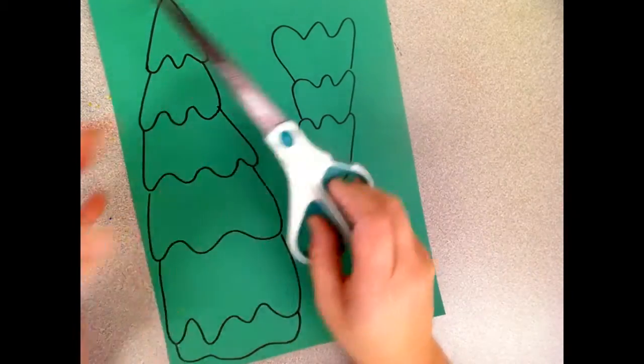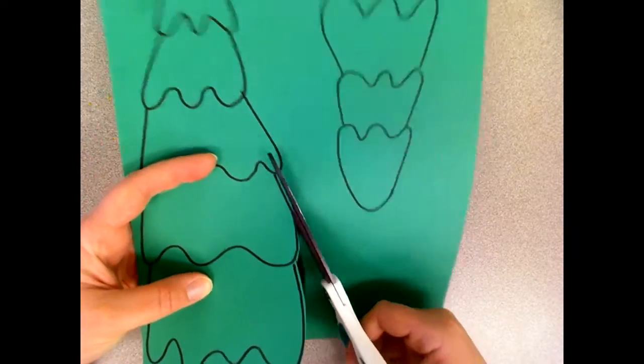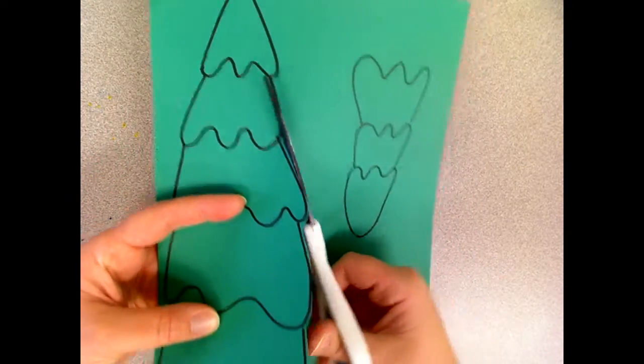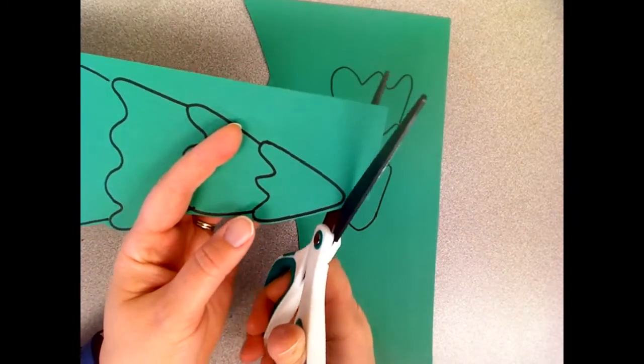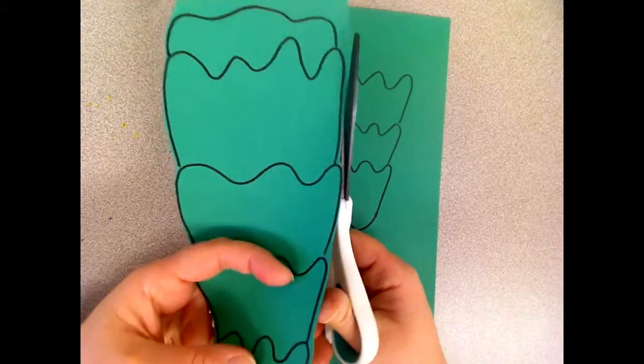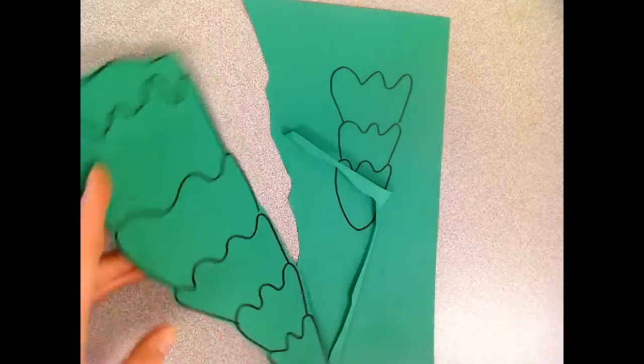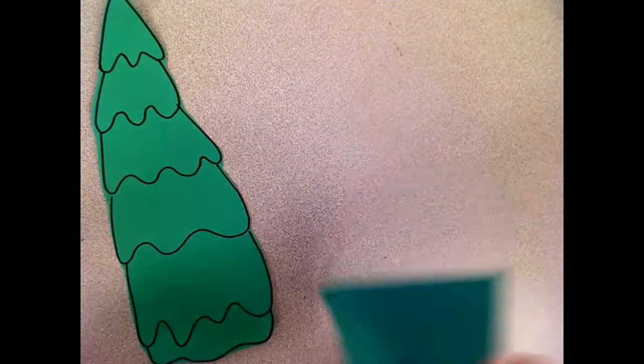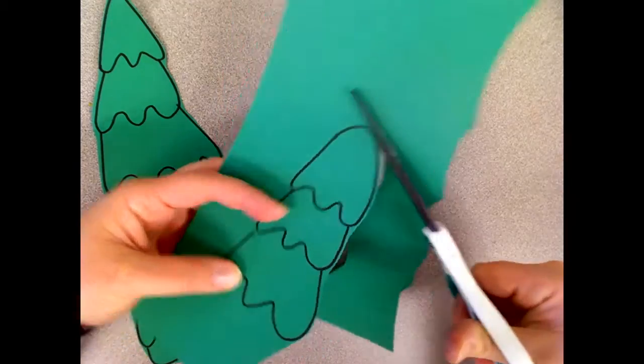When you're done drawing your two trees cut them out. You don't need to cut directly on the sharpie line. You can cut around them like I am in the video, but try and cut as close as you can. Cut out both trees and when you're finished throw away your scraps.